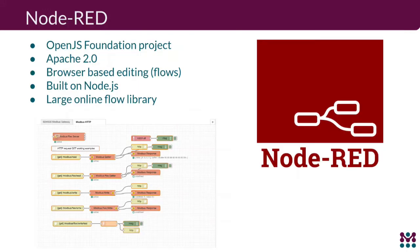Node-RED is an OpenJS Foundation project licensed under Apache 2.0. It provides browser-based editing of your IoT logic using flows and nodes that you connect visually — listening to traffic from an interface, processing it, and sending it to the cloud. There's also a large database of flows you can reuse, enabling collaboration since IoT use cases are often similar.